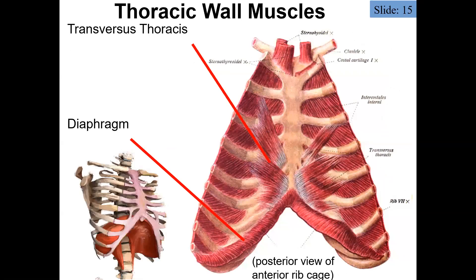Now let's look at some of the thoracic structures. As we make our way down from the neck, we introduce the thoracic region. If we remove the entire breastplate and look at the internal surface of the anterior chest wall, we see small vestigial muscles called the transversus thoracis, embedded here between each of the ribs.